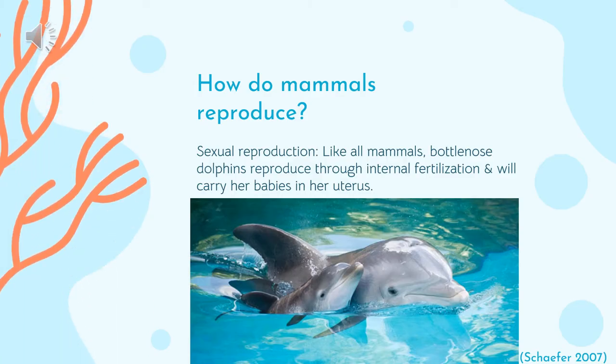Like other mammals, bottlenose dolphins reproduce through internal fertilization, similar to that of viviparous fish, and the mother dolphin will carry her babies until she is ready to give birth to them.